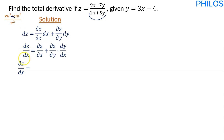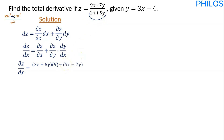In the quotient rule, v is the denominator (2x plus 5y) and u is the numerator (9x minus 7y). u prime means differentiate the numerator with respect to x, giving 9. v prime means differentiate the denominator with respect to x, giving 2. So we substitute: (2x plus 5y) times 9, minus (9x minus 7y) times 2, all divided by (2x plus 5y) squared.